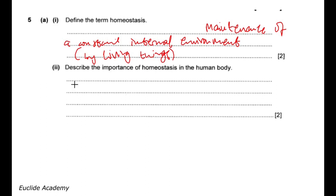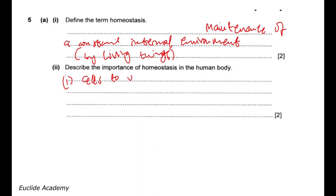The second question: describe the importance of homeostasis in the body. As mentioned in the example, the importance of homeostasis number one is that it enables the cells in the body to operate at their optimum rate — it helps cells to work at the optimum rate.